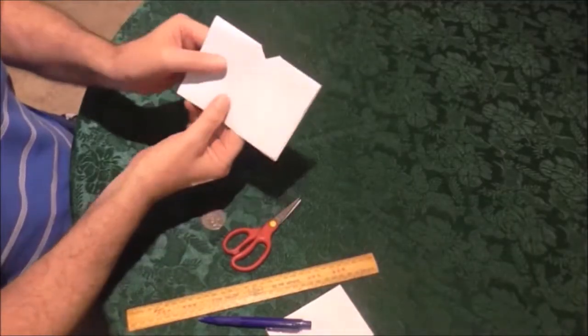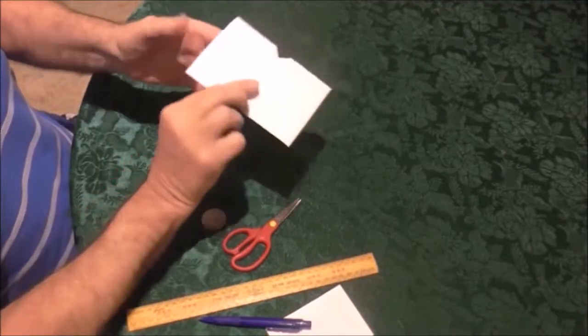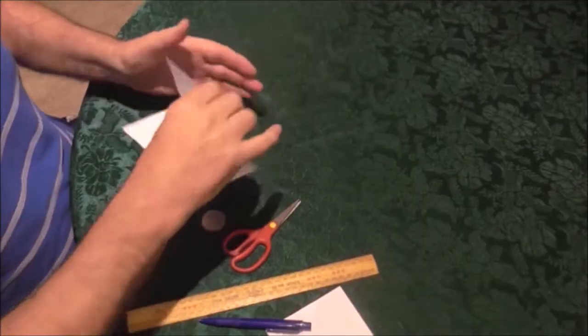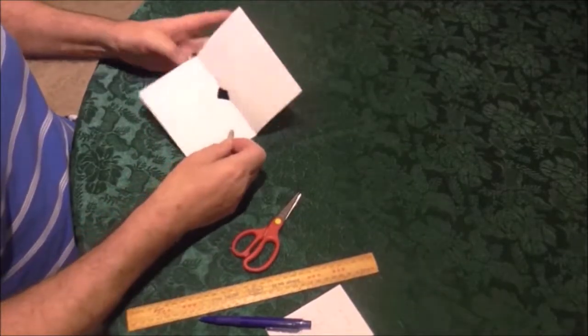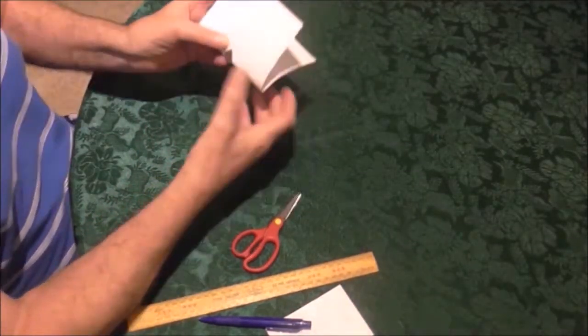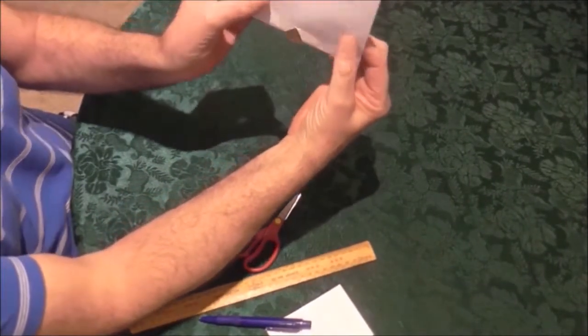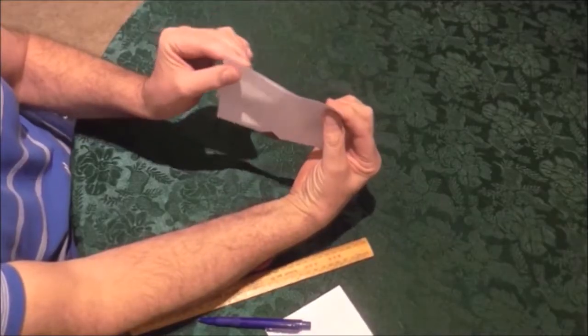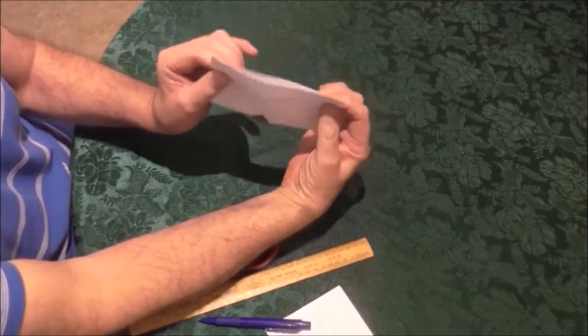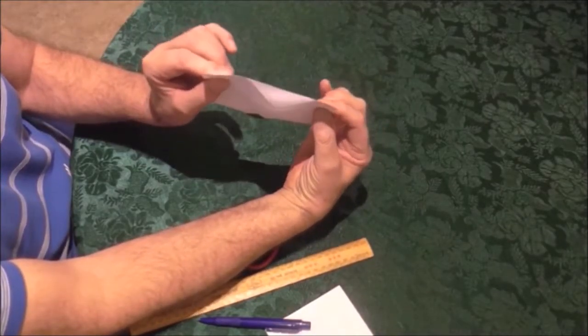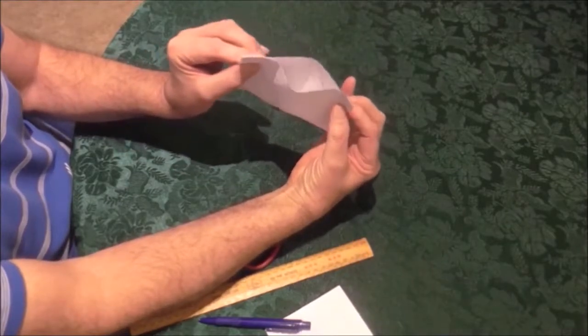You fold the paper so that there's a V on one side and a V on the other. And you open it up. Put the coin in the hole so that it just sits there. It won't go through because the coin is larger than the hole. Now what you're going to do is to push your two hands towards one another so that the paper opens up. Like that.